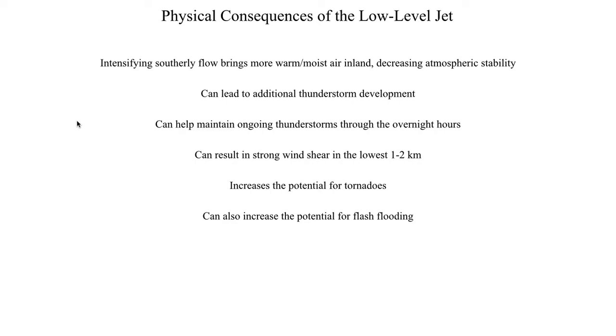The low-level jet can also increase the potential for flash flooding — not just by increasing thunderstorm coverage. Consider a hypothetical situation with a stationary front: a relatively weak wind pattern with a strong front-parallel component means thunderstorms track over the same area. But if you increase the southerly component, that forces thunderstorms to hug the boundary longer, producing widespread heavy rain. It can also fuel and intensify mesoscale convective systems. So the low-level jet has implications for tornado risk, straight-line wind risk, and flood risk in springtime or off-season severe weather events.